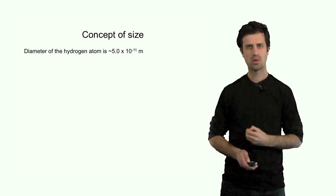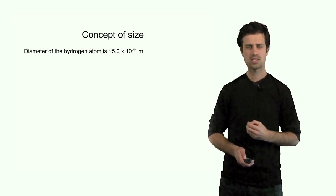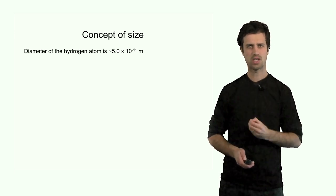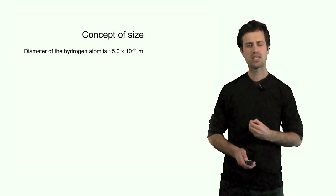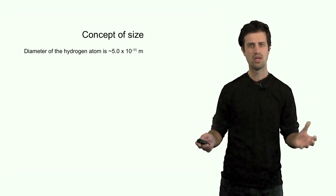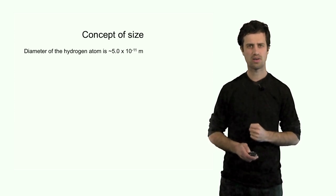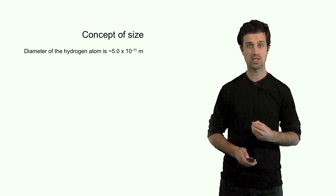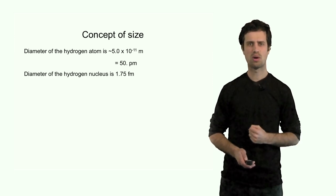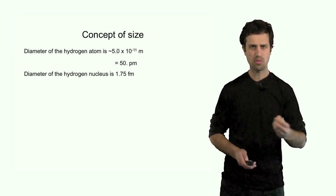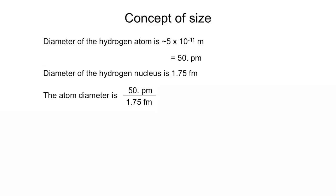Now let's look at a quantitative example. Let's take the size of the hydrogen atom nucleus, which is a proton, and compare that to the size of the atom as a whole. The atom as a whole is 5.0 × 10⁻¹¹ meters, or 50 picometers. And the size of the nucleus is 1.75 femtometers. So the ratio between the two is 50 picometers divided by 1.75 femtometers, which equals 2.9 × 10⁴.